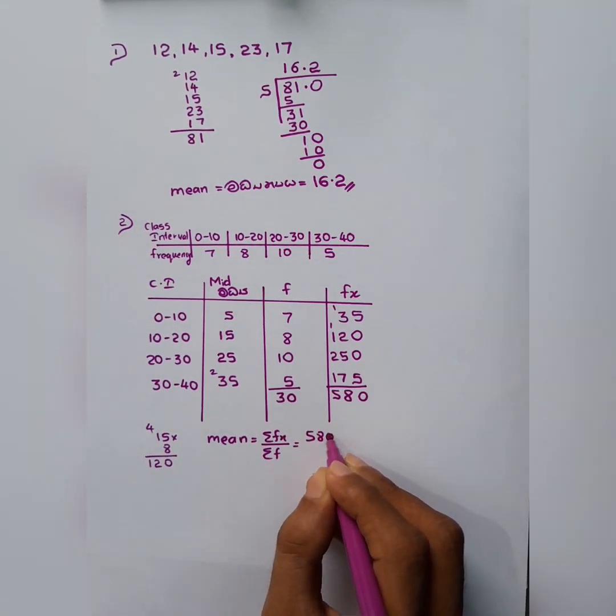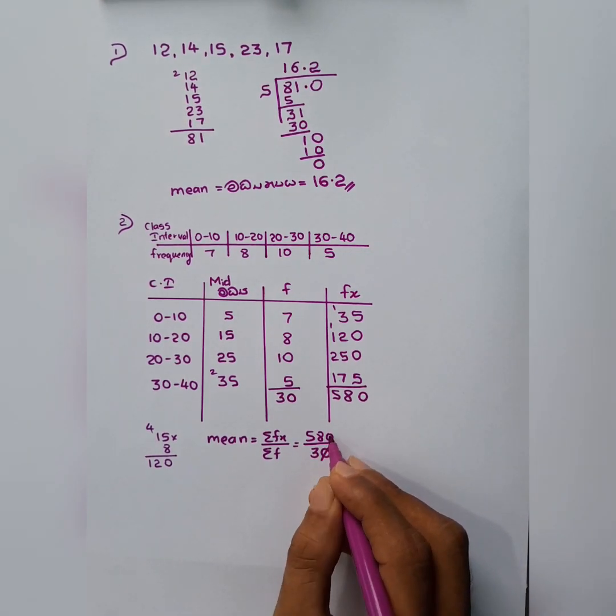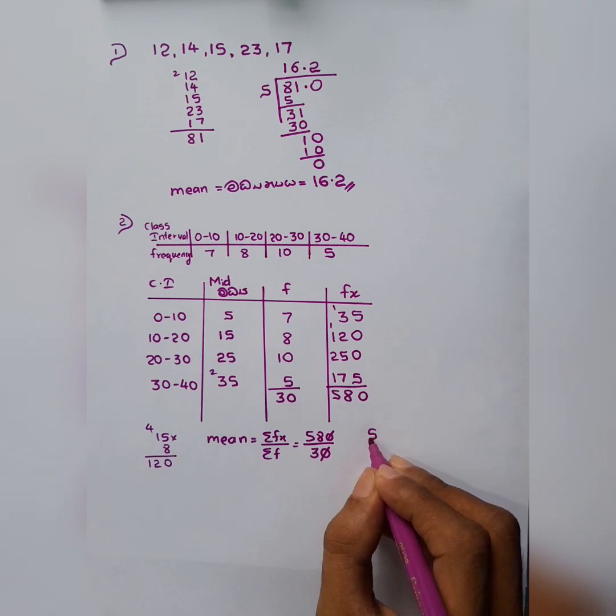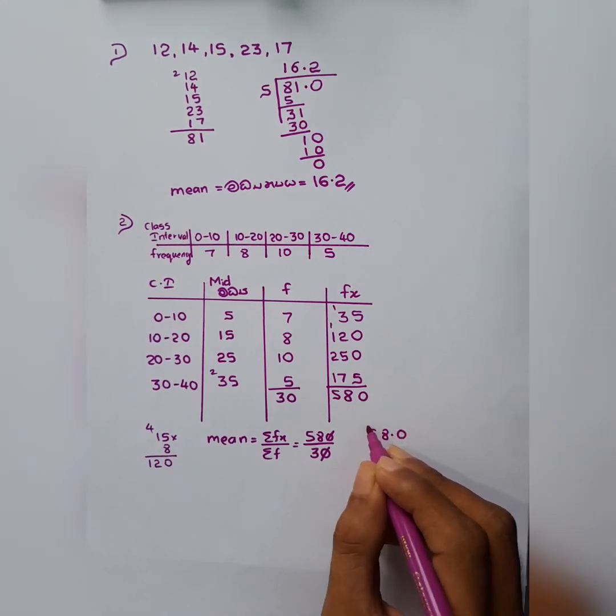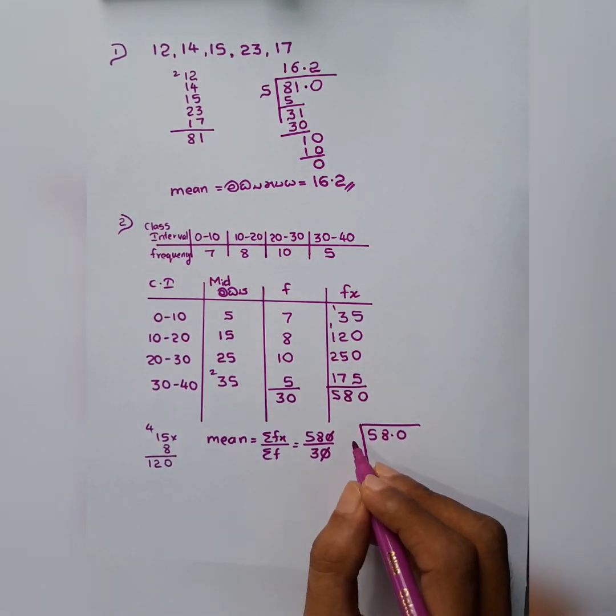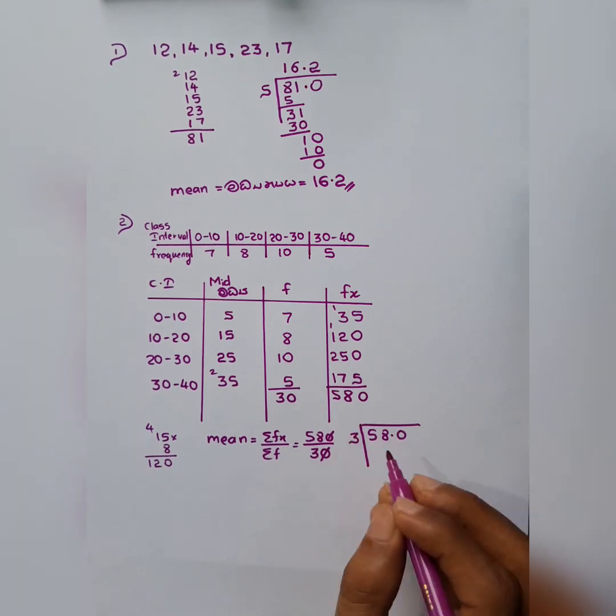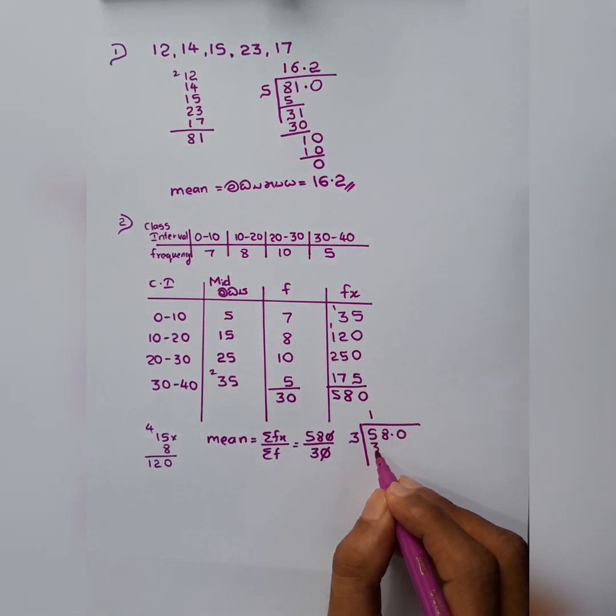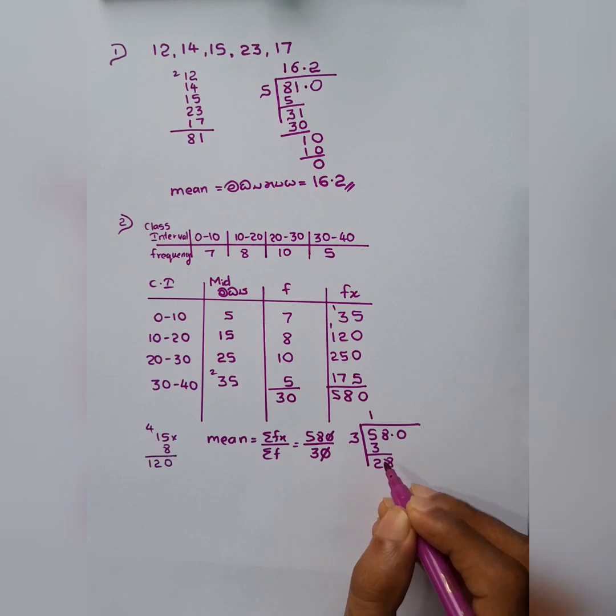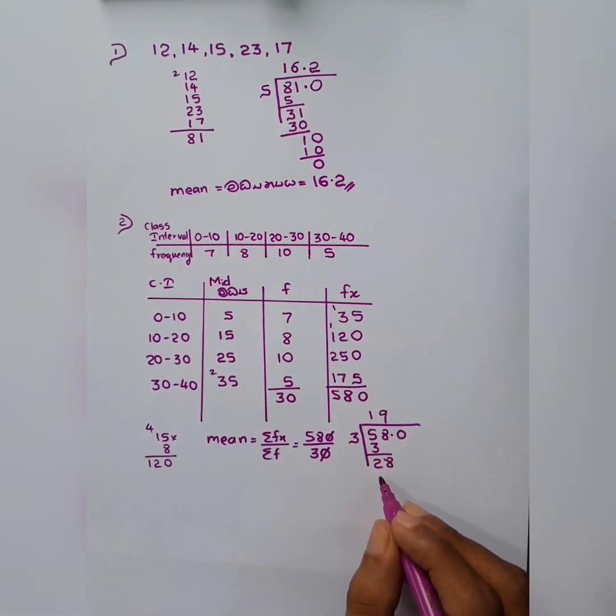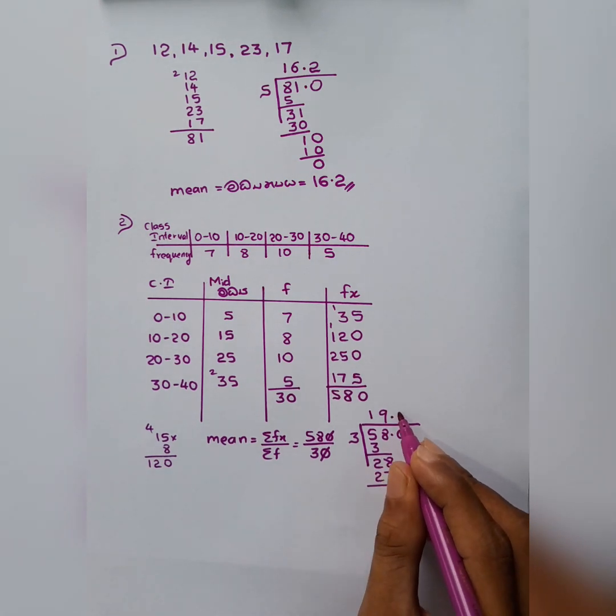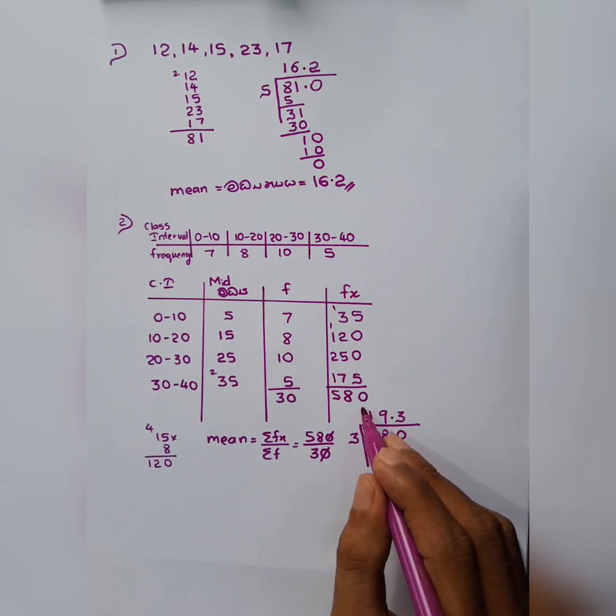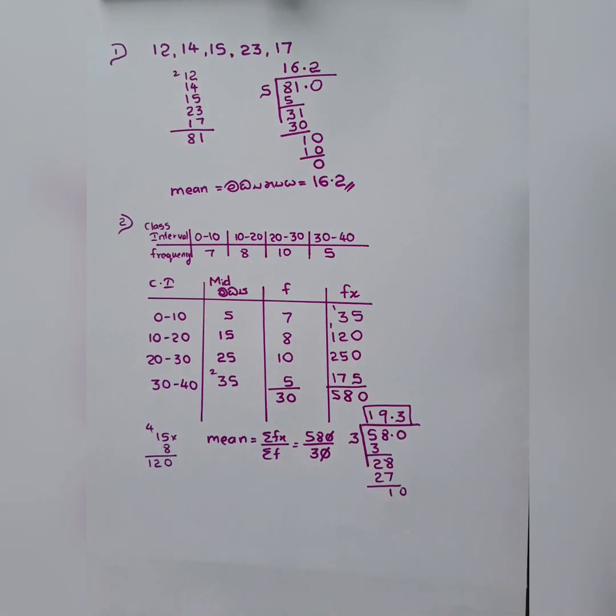Sigma fx means that 580. Divide by sigma f which is 30. 0, 0 can cancel. So 58, 0.0. Always take one decimal. In 5, how many 3's are there? 1. In 28, 9. And in 10, 1. Sorry, 3. That's it. 19.3 is the answer.